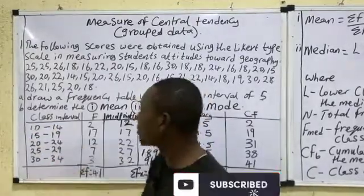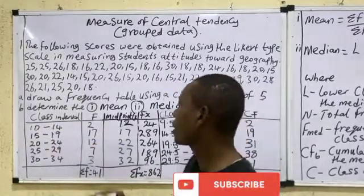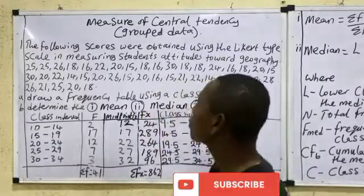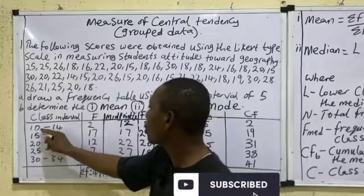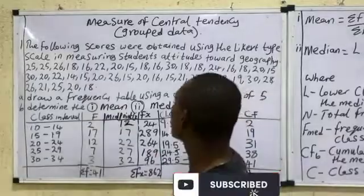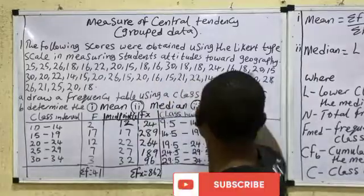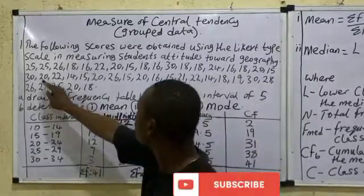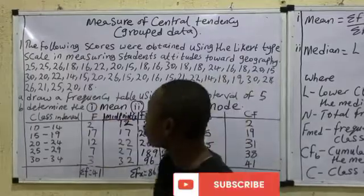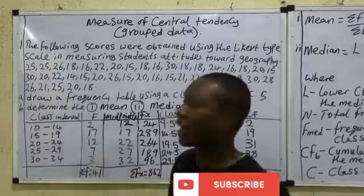Note that all the lower class limits are multiples of 5, which satisfies the conditions for checking your work. Now count the values between 10 and 14. There is no value before 14, but there are two 14s, so the frequency for the class 10–14 is 2.